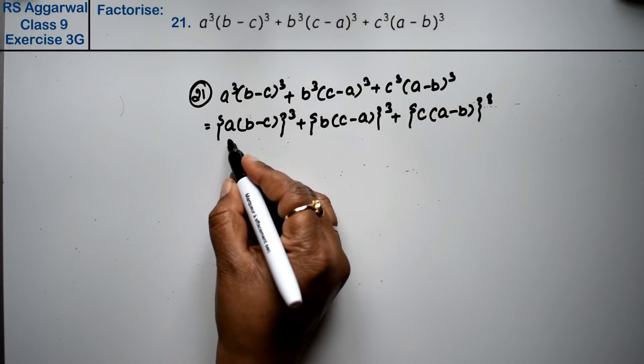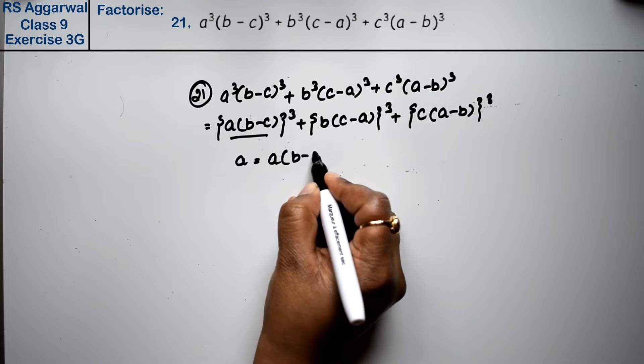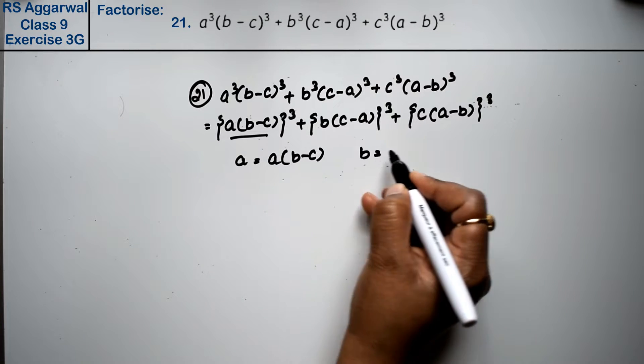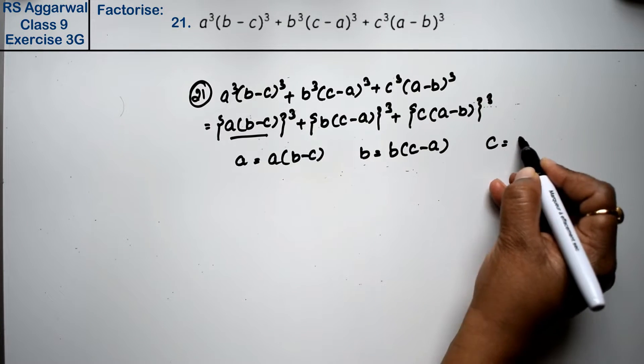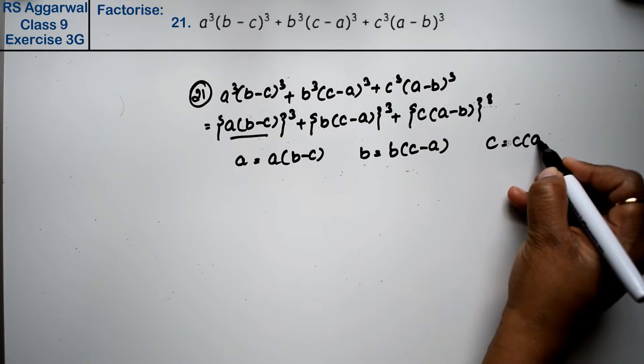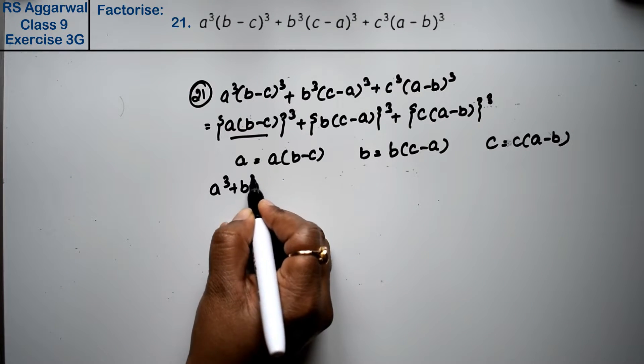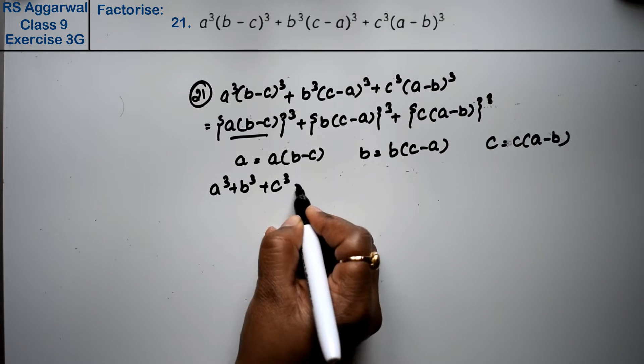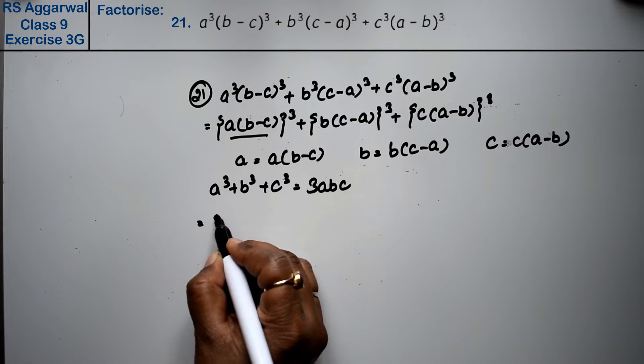Now if we take a as a times (b - c), b as b times (c - a), and c as c times (a - b), right friends, this is the formula for a³ + b³ + c³ which equals 3abc.